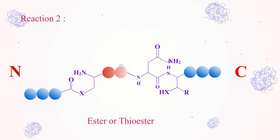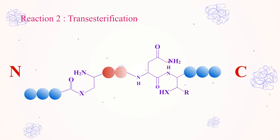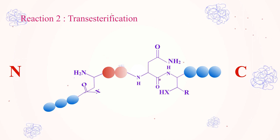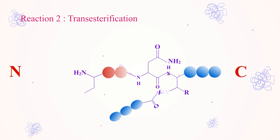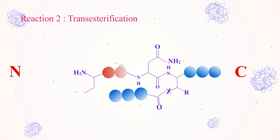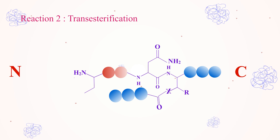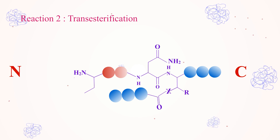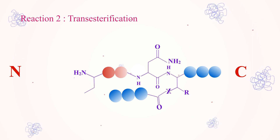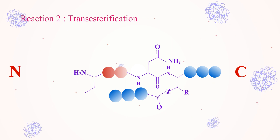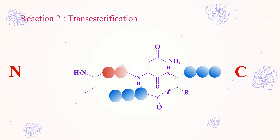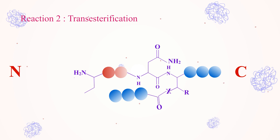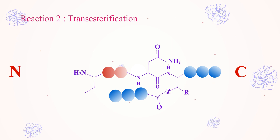Reaction 2: Transesterification. In this step, the conserved cysteine, serine, or threonine amino acid seen in the C-terminal extein will attack the newly formed ester group of the N-terminal splice junction thioester, which will lead to the ligation of exteins with each other.